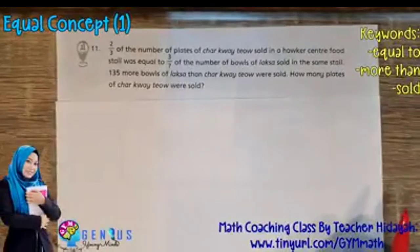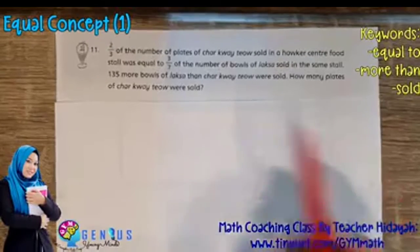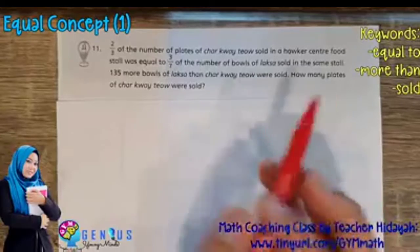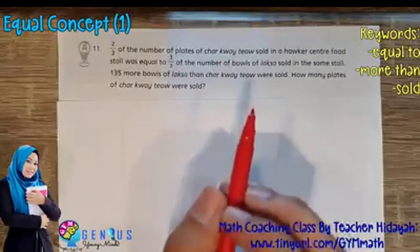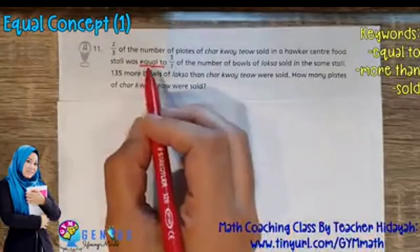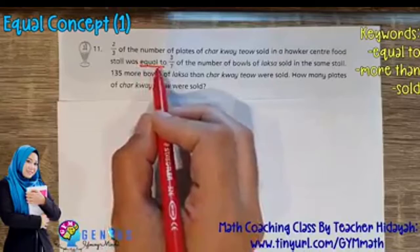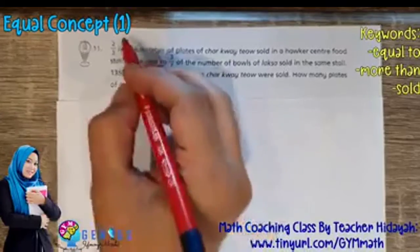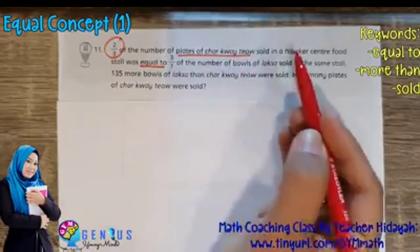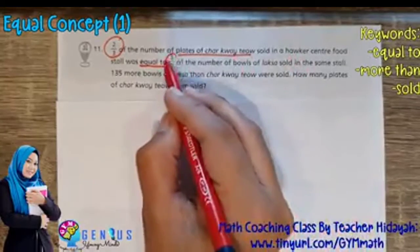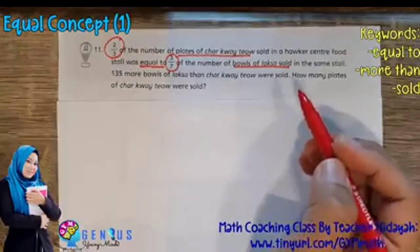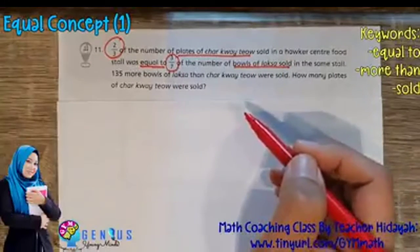Here we have an equal concept question involving fractions. How do I know this is equal concept? The main keyword we have identified is 'equal to.' Whenever you have a question that has 'equal to,' with a fraction before it and another fraction after it, this is the equal concept.